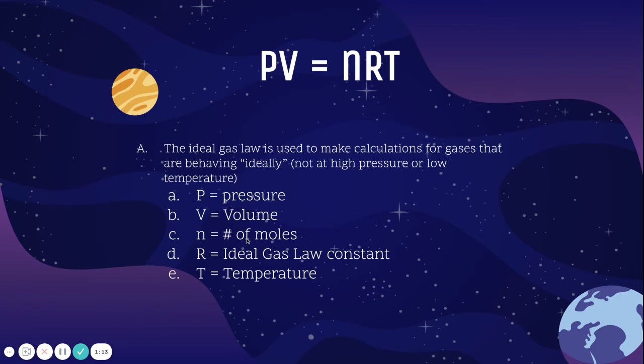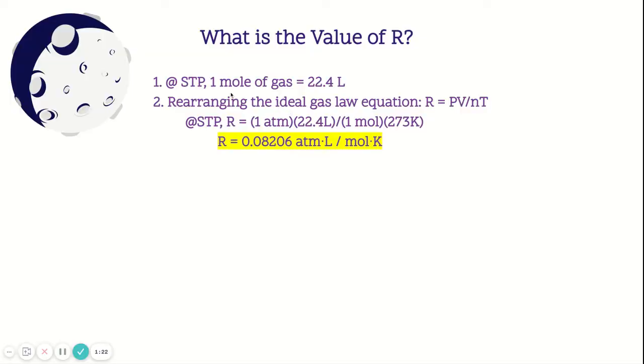So P is pressure, V is volume, n is the number of moles. Those are all the variables. R is the ideal gas law constant and then T is temperature. So what is the value of R?